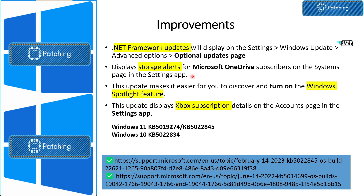Another improvement is that you will now be able to see storage alerts for Microsoft OneDrive in the Systems page within the Settings app. Another improvement is related to the Windows Spotlight feature. And another one is Xbox subscription details — you can check Xbox subscription details from the Settings app. You can refer to the links shown here for more details, and I will add these links to the description of the video as well.